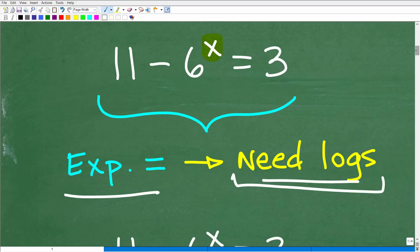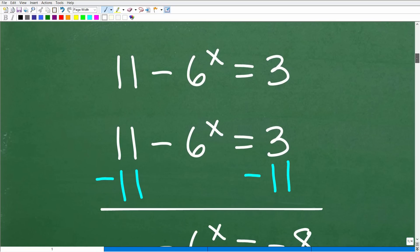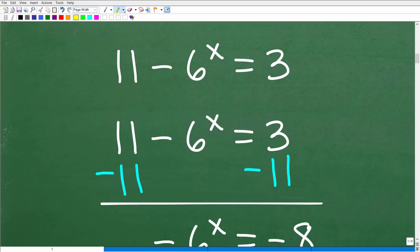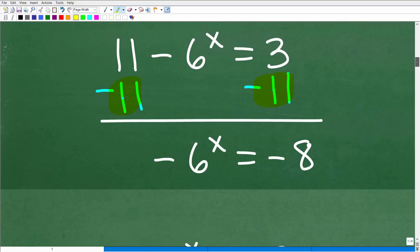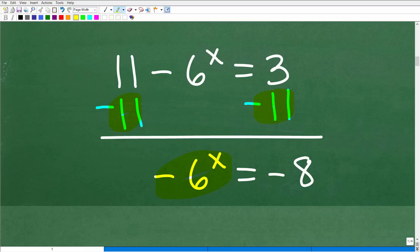So we're going to need to use logarithms to solve this equation. But before we do that, what we want to do is structure this equation so we can take the log of both sides. So the objective here is to get your power with the variable in the exponent on one side of the equation and a number on the other. So basically, that's the setup here. You have your power and one number. So obviously, we don't have that scenario right now. But we can clean this up, no big deal, just using some basic Algebra. So the first thing I'm going to do is subtract 11 from both sides of the equation, and what do we get? We get negative 6 to the x is equal to negative 8.